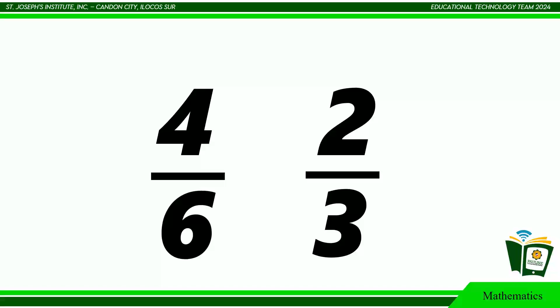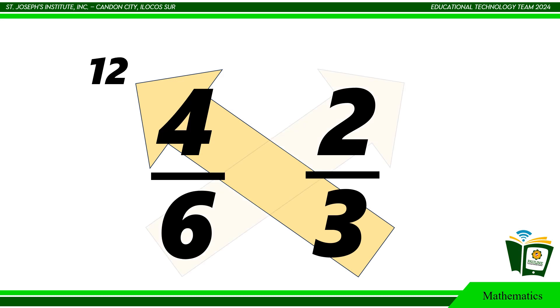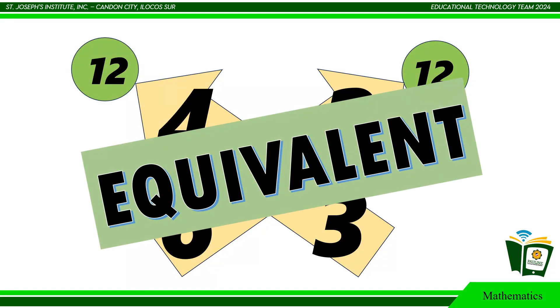3 times 4 equals 12. 6 times 2 equals 12. They have the same cross-products, then these two ratios are equivalent.